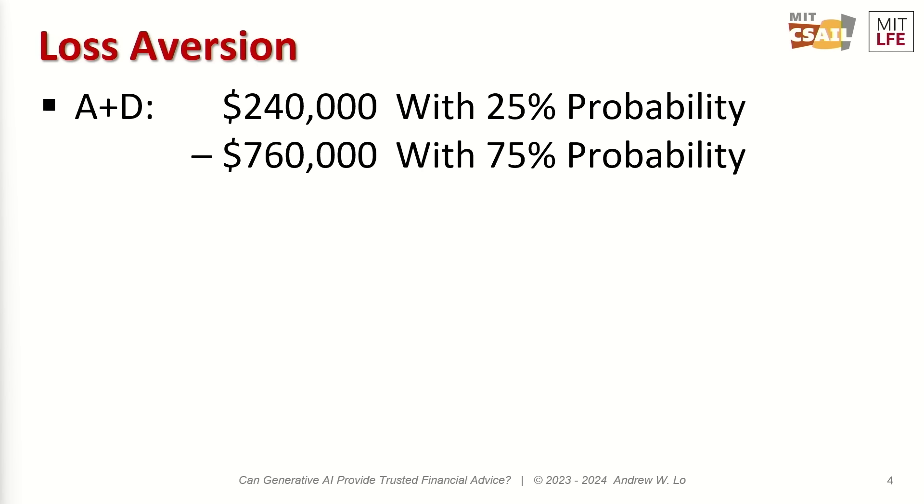How did I get that? If you pick A, you get $240,000 for sure. But if, in addition to A, you also pick D, there's a 25% chance you'll lose nothing on D, in which case you keep the $240,000. But there's a 75% chance you'll lose a million on D, leaving you with minus $760,000. That's how I got the A and D combination.